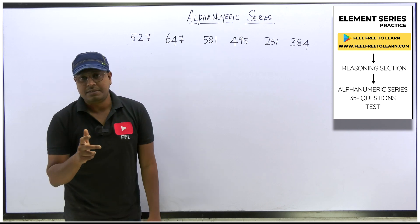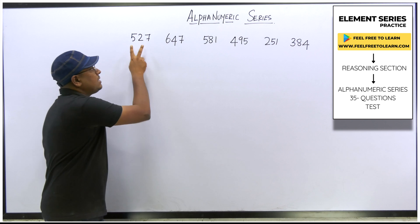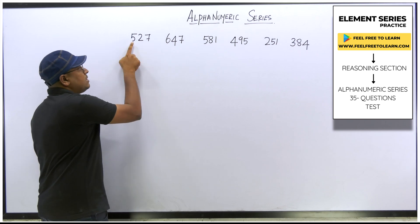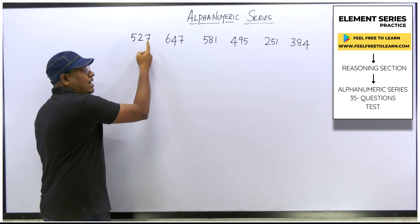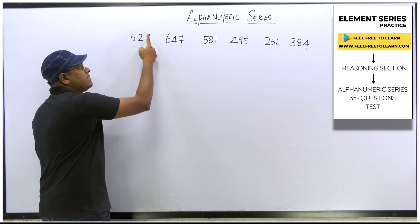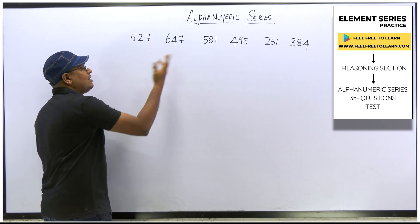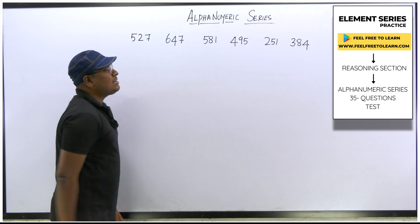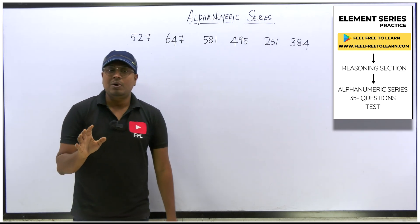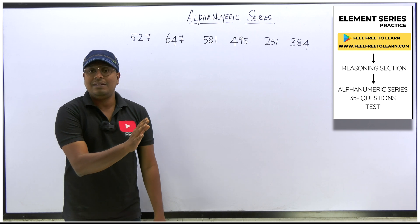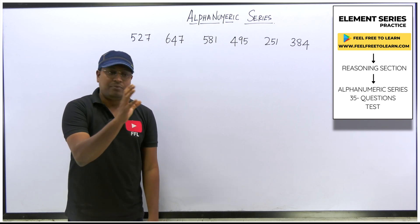In alpha numerical series, questions are mostly based on numbers. If it is a three-digit number, you need to know the first digit, second digit, and third digit, and how to arrange these numbers in ascending or descending order. These skills are most important and it is a very easy topic.